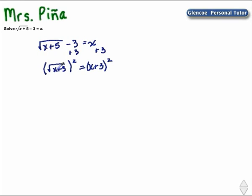On the left side then, because the square undoes the square root, you're left with x plus 5. On the right side, be careful.